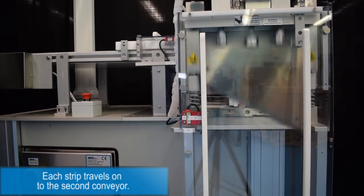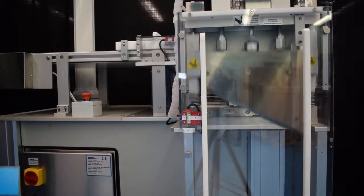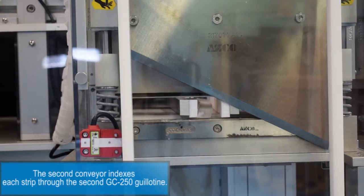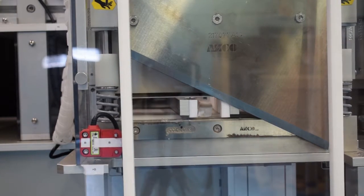Each strip travels onto the second conveyor. The second conveyor indexes each strip through the second GC250 guillotine.